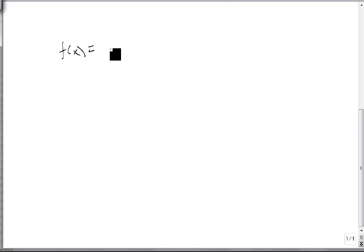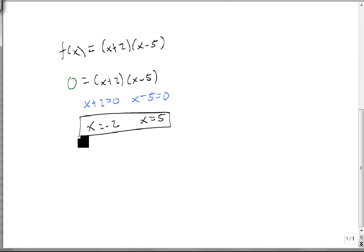Suppose f of x equals x plus 2 times x minus 5. So again, we replace the f of x with 0, so 0 equals x plus 2, x minus 5. Solve the two separate equations or use the shortcut and end up with x equals minus 2 and x equals 5. So there are our correct roots, our correct zeros or our correct x-intercepts.